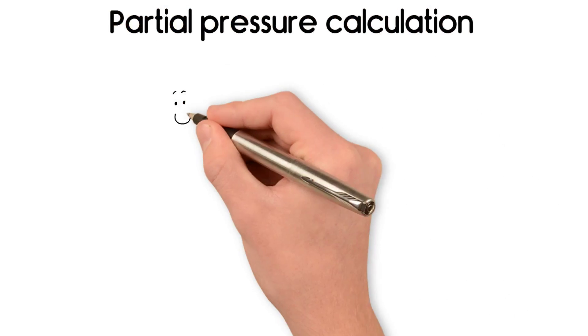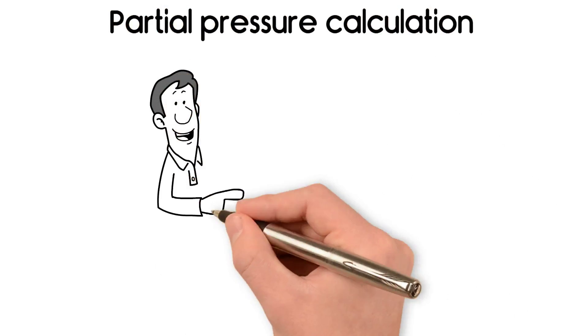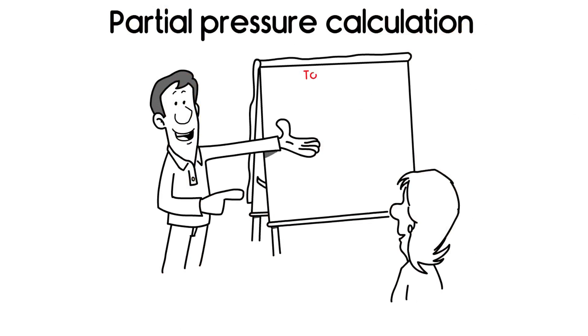Partial Pressure Calculation Example is used with O2 as the gas. Pressure divided by 100 times known percent volume of gas equals MbPPO2.